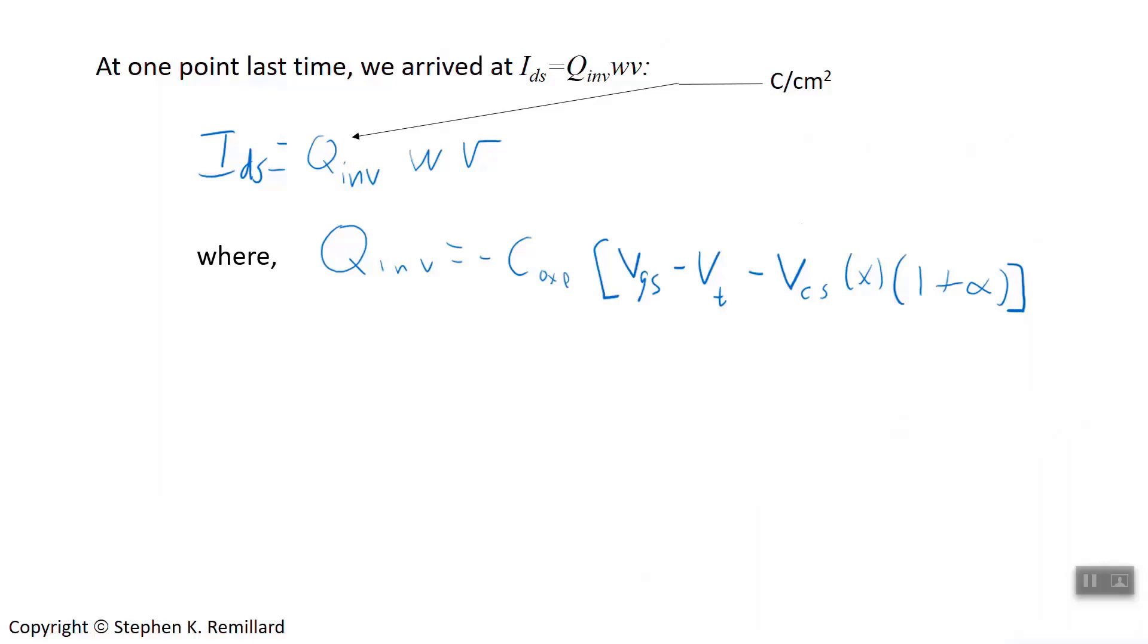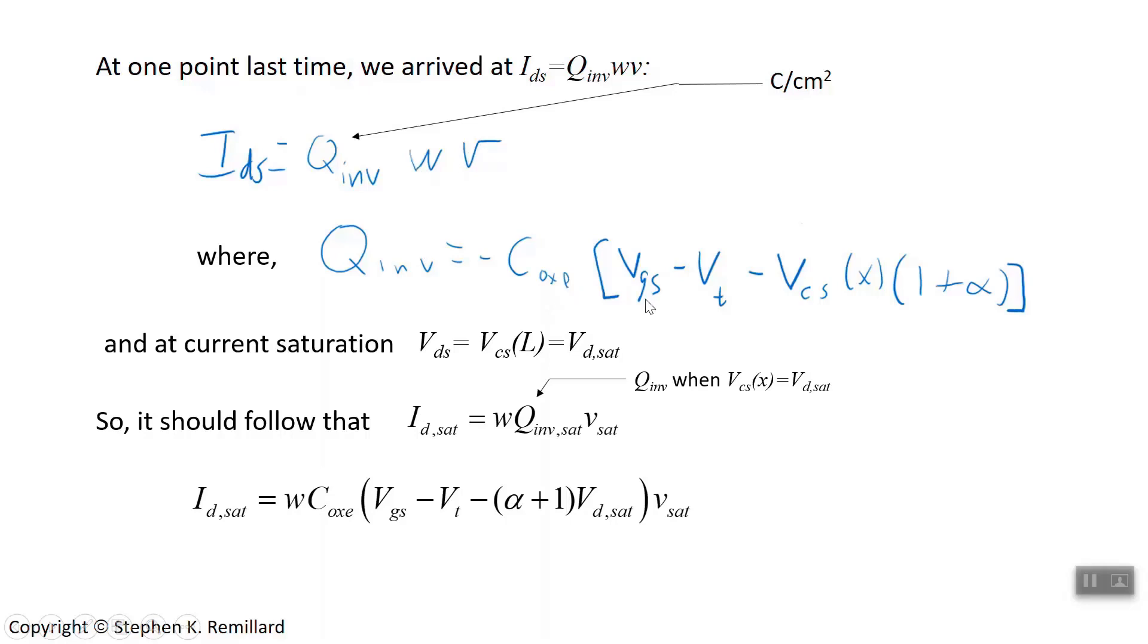Put that expression in our expression for I_DS. Let's make an argument here: V from the drain to the source is V from the channel to the source when x equals L, because x equals L at the drain and x equals zero at the source. If we arrive at saturation, then V_Dsat is the voltage at the drain. So I will use V_channel-source at L, replace that with V_Dsat. And if I replace V_channel-source at L with V_Dsat, then this I_DS is actually I_Dsat. So I_Dsat is W times the inversion charge when you're at saturation times the velocity when you're at saturation. And for the inversion charge at saturation, use this expression, but we're using V_Dsat instead of V_channel-source at x, because V_Dsat is the voltage at x equals L when you're in saturation.